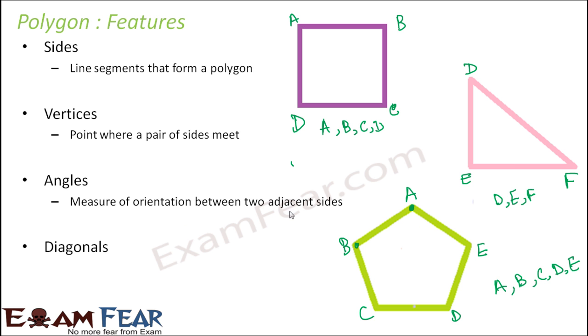Angles, measure of orientation between two sides. So this is one angle, this is another angle, this is one angle which is orientation between the sides AB and BC. Similarly, this is an angle which is orientation between BC and CD. So a triangle has three angles. Similarly, this polygon has one, two, three, four and five angles.